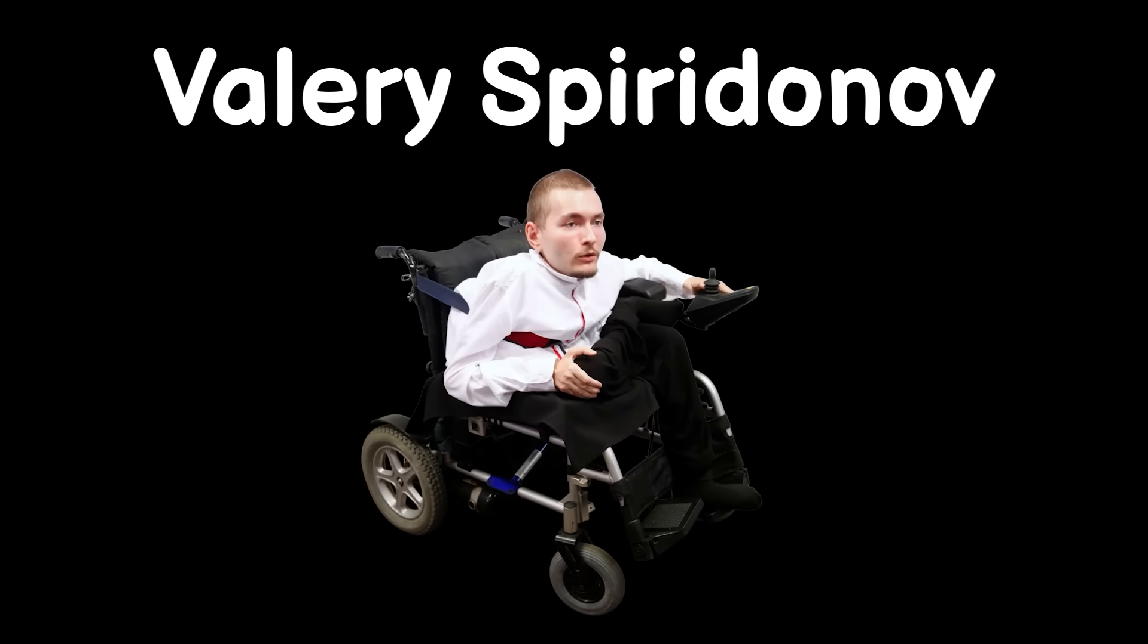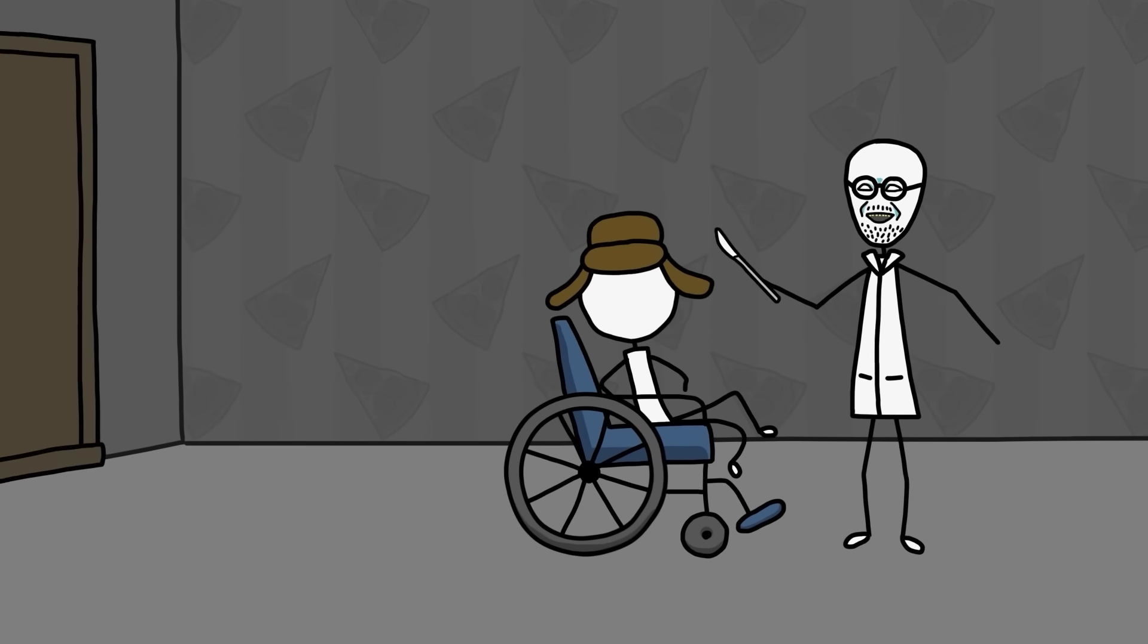So of course, the next logical step was humans. Enter Dr. Sergio Canavero, Italian neurosurgeon. Big ideas, bigger ambition. In 2017, he announced that he was ready to perform the world's first human head transplant. He had a plan, a technique, and even a volunteer: a Russian man named Valery Spiridanov, who suffered from a degenerative muscle disease and was willing to take the gamble. The plan was to freeze the head, sever the spinal cord very precisely, attach it to a new donor body, and then use a special chemical, polyethylene glycol, to fuse the nerves back together.